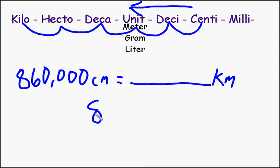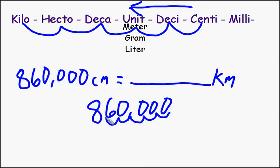So let me rewrite this down here. 860,000. Moving this to the left, I have to move the decimal to the left five times. One, two, three, four, five. So that would be 8.6. I don't have to add these zeros over here. They can just go away. 8.6 kilometers or 8 and six tenths of a kilometer. Pretty easy, right?